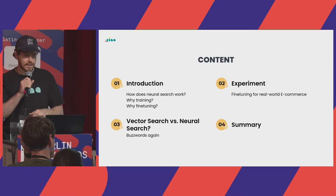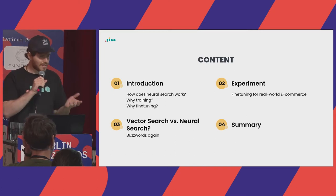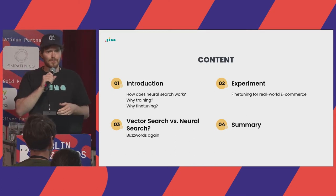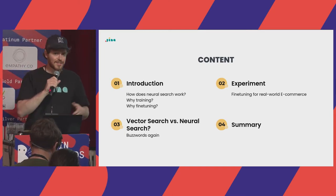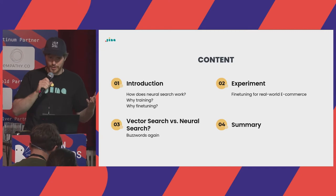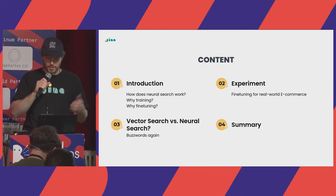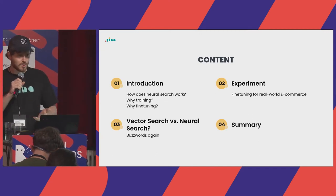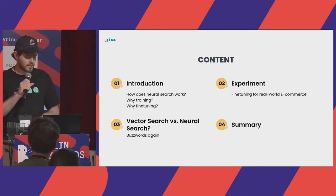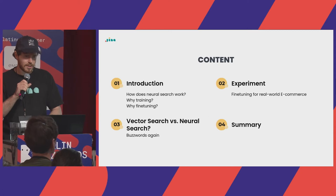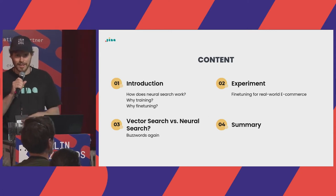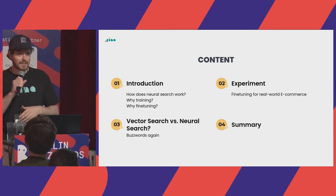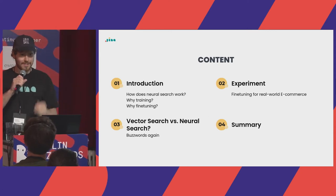We'll also explain the difference between what we think of as neural search — our buzzword — and traditional vector search. And at the end, of course, a summary where you can take photos.